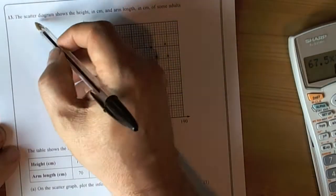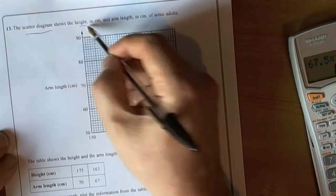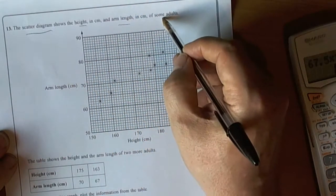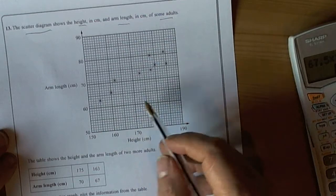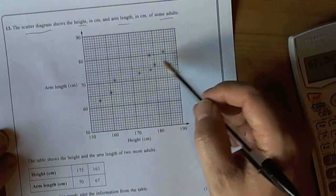This question involves a scatter diagram and it's given some information about the height and arm length for some adults. So scatter graphs are about the relationship between two variables and they show a general pattern.